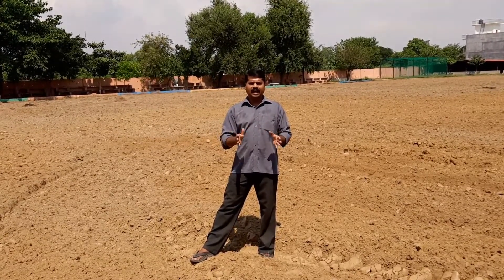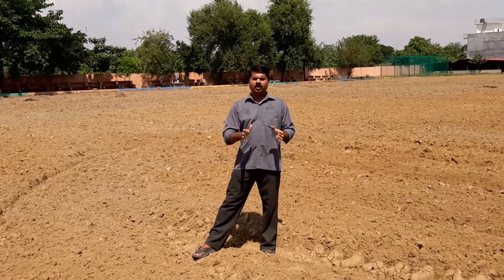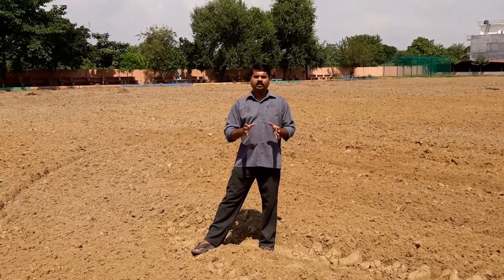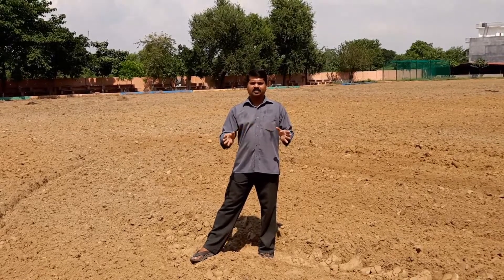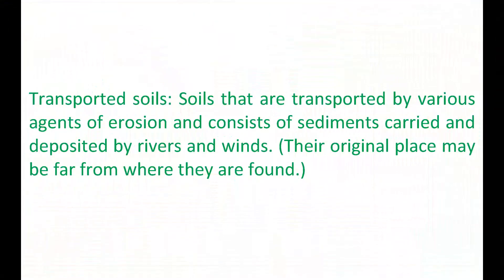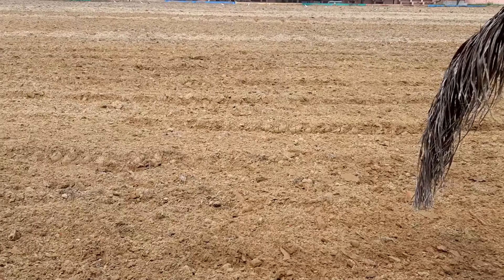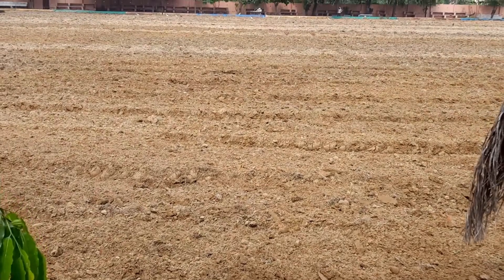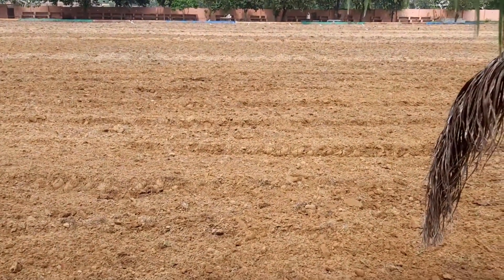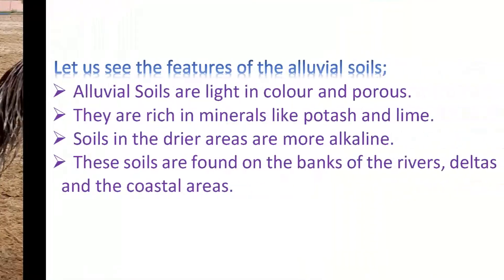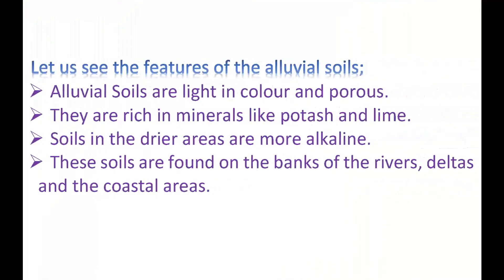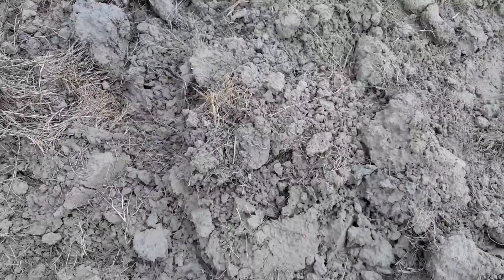Alluvial soil is light in colour. It is found with alluvium — loose material eroded from hilly regions. Soils transported by various agents of erosion and deposited by rivers and winds are called transported soils. Alluvial soils are light in colour and porous, rich in minerals like potash and lime. Soils in drier areas are more alkaline. They are found on the banks of rivers, deltas, and coastal areas.